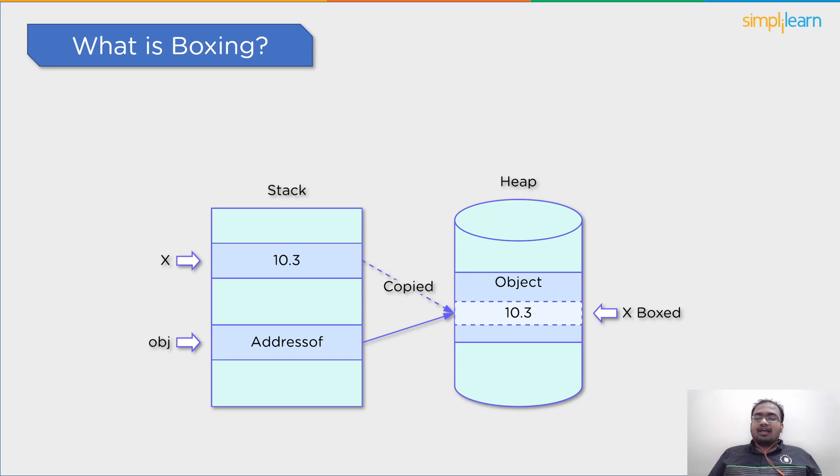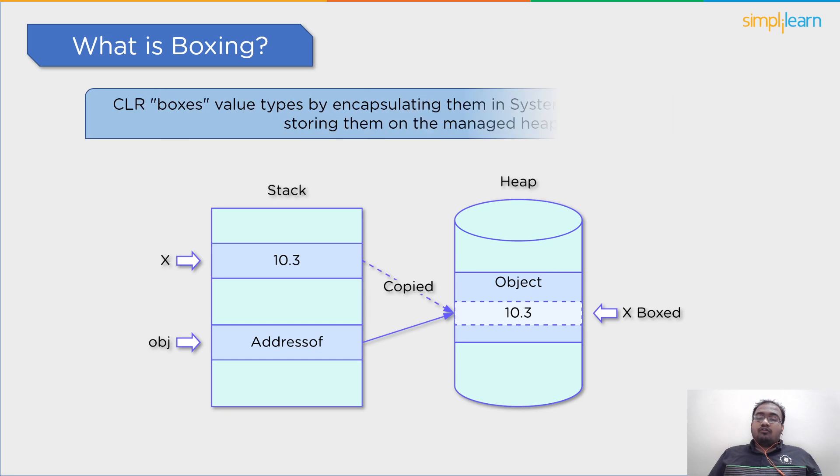Next, we have boxing is an implicit translation technique that employs object type that is a super type. When the CLR boxes a value type, it wraps the value into a system.object and saves it on the managed heap.